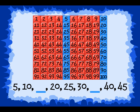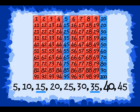Okay, let's begin. 5, 10 — we've hit a blank. What number do you think goes in this blank? That's right, 15. Now let's keep going: 20, 25, 30 — we've hit another blank. What number do you think goes in this blank? That's right, 35. Now let's keep going: 40, 45. Great! Now we can count the whole list together. Count with me: 5, 10, 15, 20, 25, 30, 35, 40, 45. Great job!